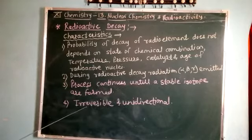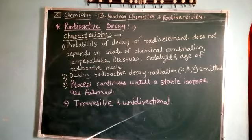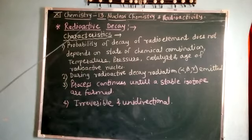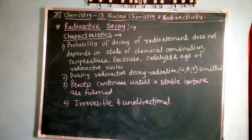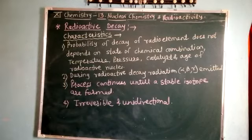Finally, radioactive decay is an irreversible and unidirectional process. There are three types of radioactive decay: alpha decay, beta decay, and gamma decay.